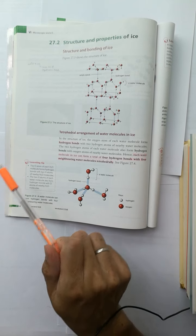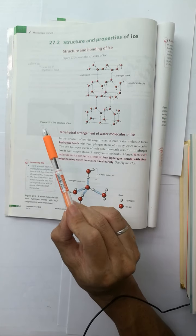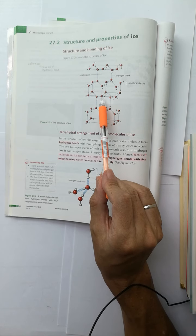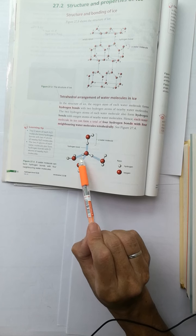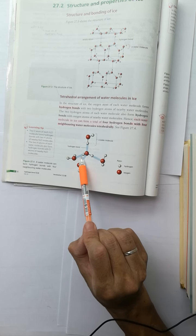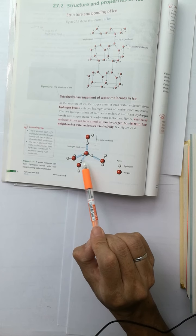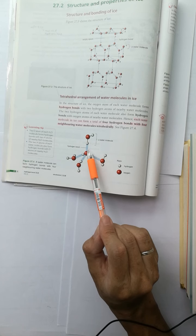When you look at the ice structure, the water molecules have two hydrogen bonds from these hydrogen atoms and the other two hydrogen bonds from the lone pair electrons.